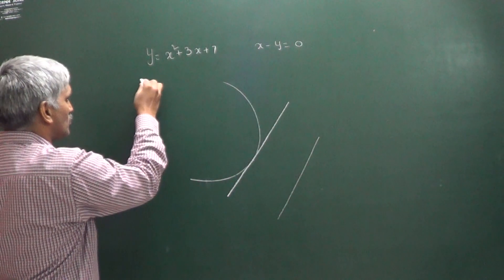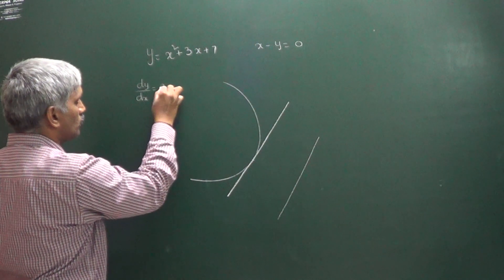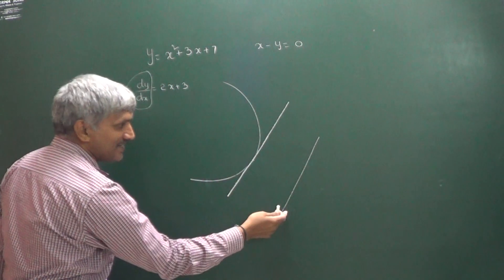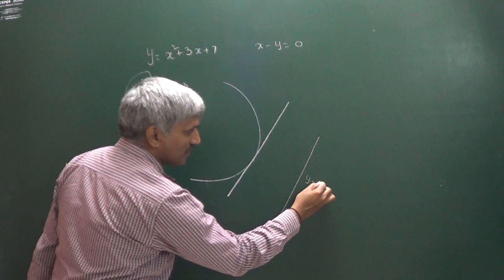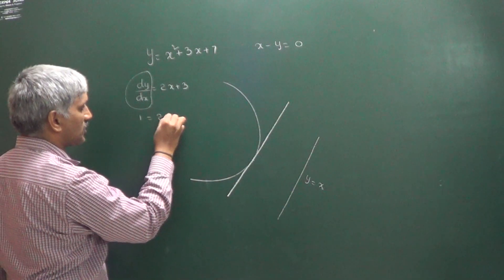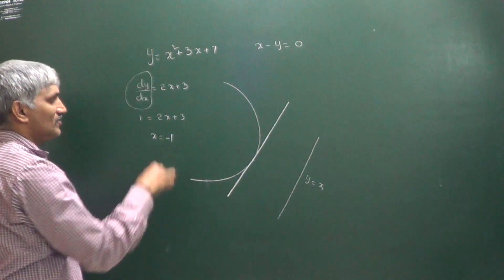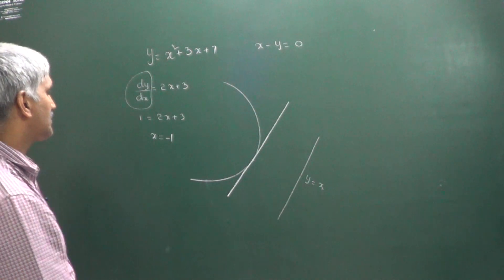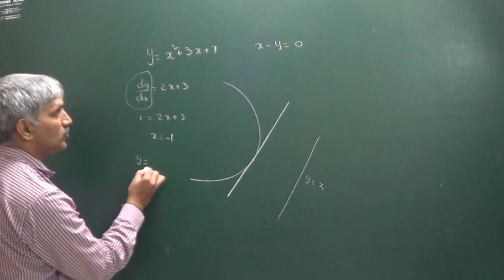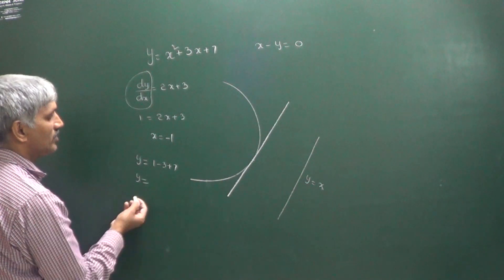Differentiate the curve to get dy/dx = 2x + 3. Since the line is y = x, its slope is 1. So 2x + 3 = 1, giving x = -1. Substituting x = -1 into the parabola: y = 1 - 3 + 7 = 5.